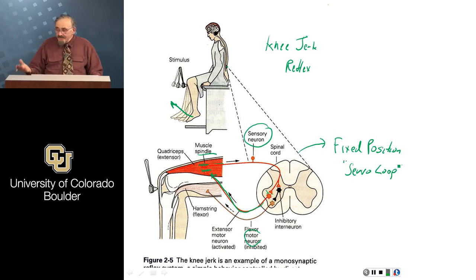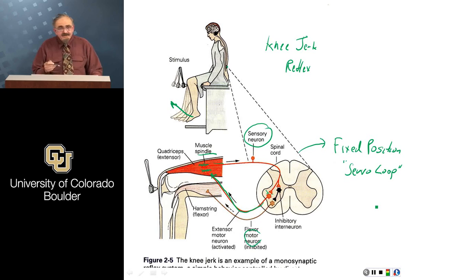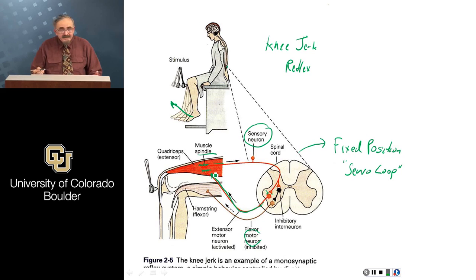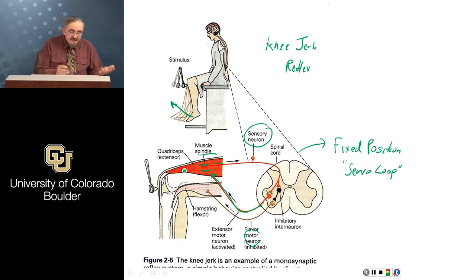When you want to move your arm — say, pick up a pen and move it — you issue commands in the form of spatial commands, telling your hand to go from here to there. But you don't communicate with the muscles directly. You send that signal down to the spinal cord, which sets up a servo loop that repositions the hand regardless of the force required, up to a certain point. So you can issue the same position commands whether picking up a light or heavy pen.